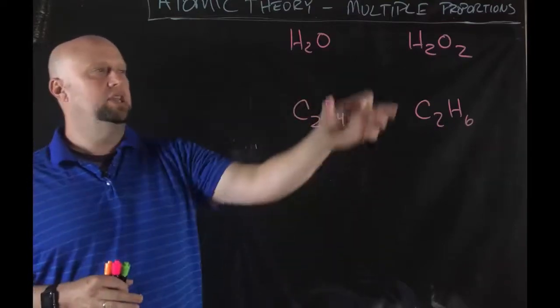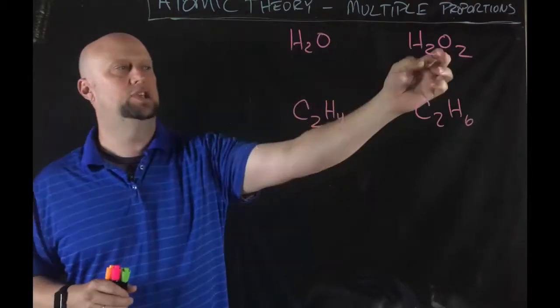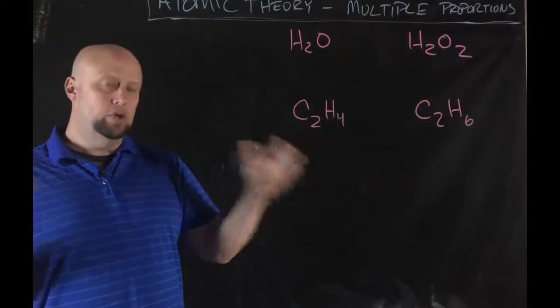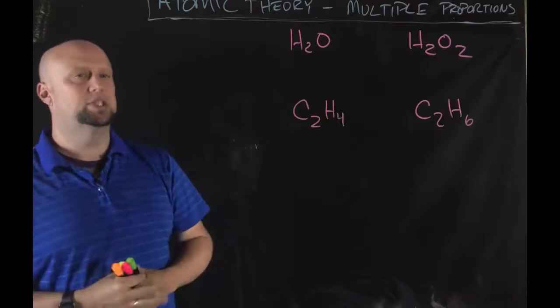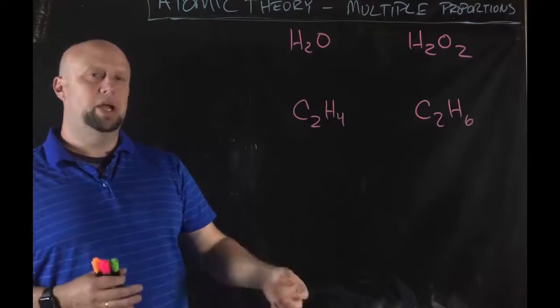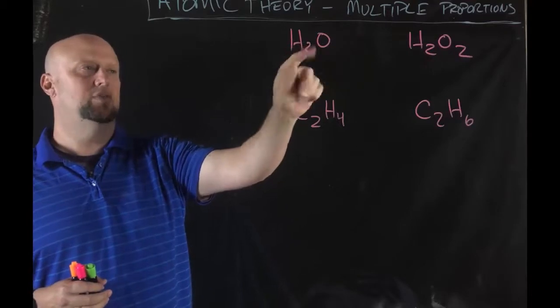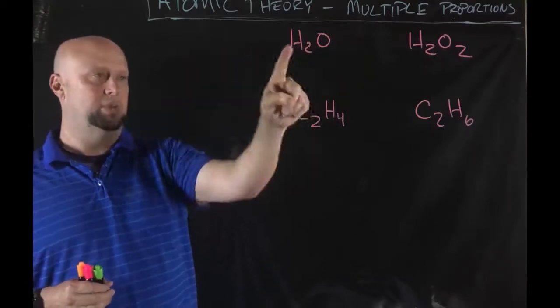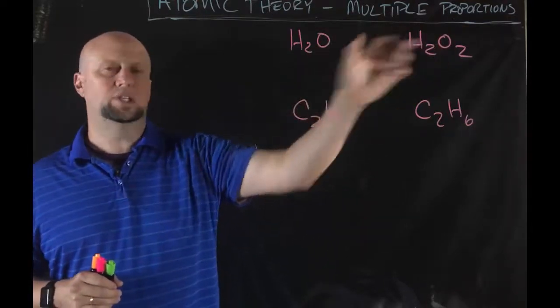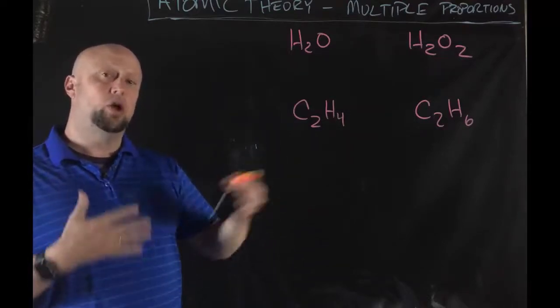The law of multiple proportions says that if you've got two compounds that have the same elements in them - hydrogen and oxygen, or carbon and hydrogen - two different compounds, same elements, then if you compare the two elements to each other and reduce it down so that you've got the same amount of one of the elements, like hydrogen in this case, the ratio of the other two elements to each other should be able to be expressed in small whole number ratios.